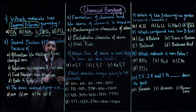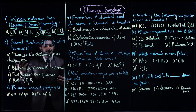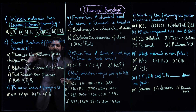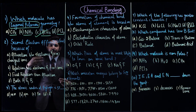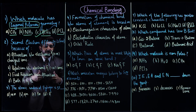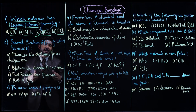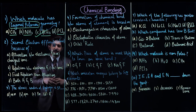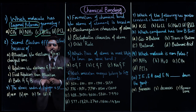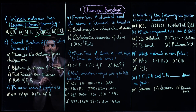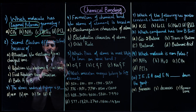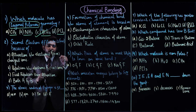Geometry explains shapes according to VSEPR theory. We have AB2, AB3, AB4, AB5, and AB6 type molecules. So by the way, what is the shape/geometry of the AB6 type molecule? This is what you have to mention in the comments.